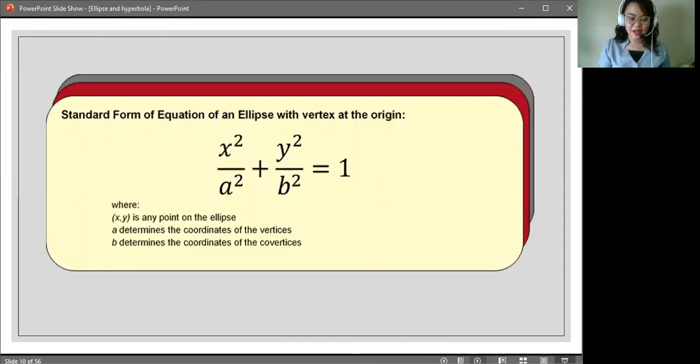This is now the standard form of equation of an ellipse with the vertex at the origin. We have x squared over a squared plus y squared over b squared equals 1. And take note again, when we have the equation of an ellipse, we are talking about the sum. So this is always addition. Please take note of this.